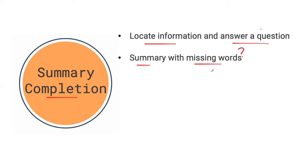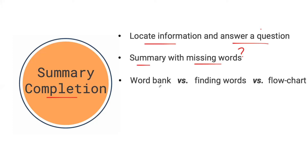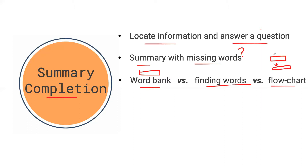Your summary can be shown to you in three different ways. Options with a word bank will give you a box with potential options. If you don't have a word bank, you will have to find the words yourself in the passage. You might also have a flow chart — basically boxes with arrows — perhaps showing steps of a process or some sort of procedure. The flow chart is definitely the most unique of the three.